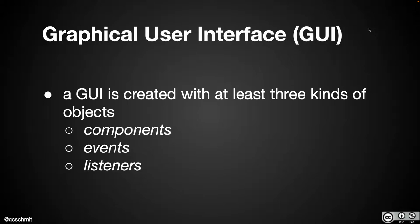When we create a GUI in Java, there are at least three different kinds of objects. I want to introduce each of these and define what they mean. We have components, we have events, and we have listeners. These three different types of objects work together to make our GUI, our app, work.